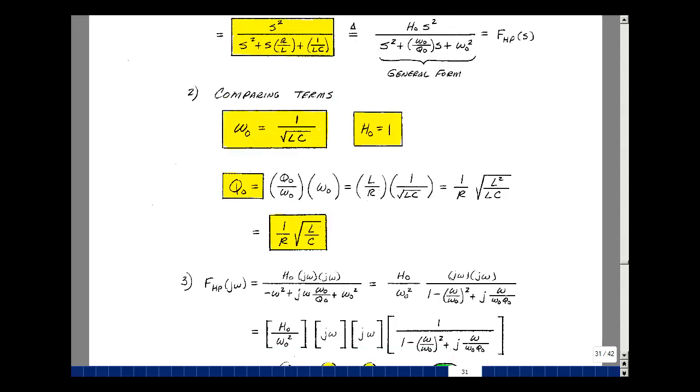Now to sketch the magnitude versus frequency, let's take a look at our transfer function for S equals J omega. Let's do it with our general form. We have H naught times S squared. I'm just going to write that as J omega times J omega because that's one of our forms. And then our denominator is going to be S squared, which is minus omega squared, then J omega times omega naught over Q naught, and then omega naught squared.